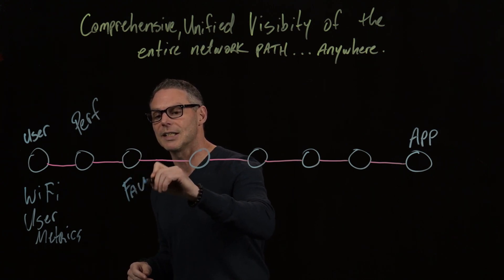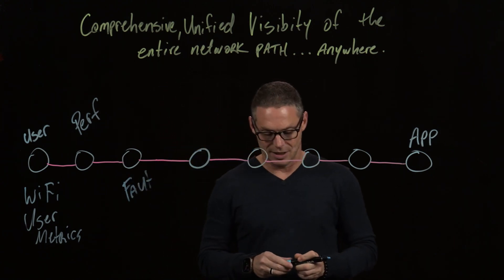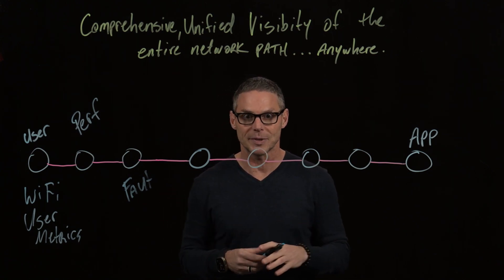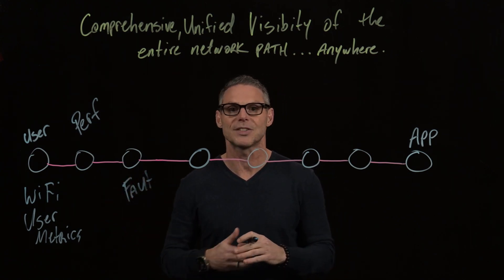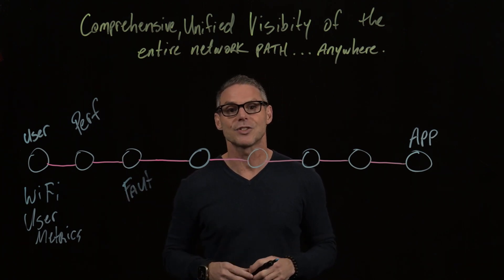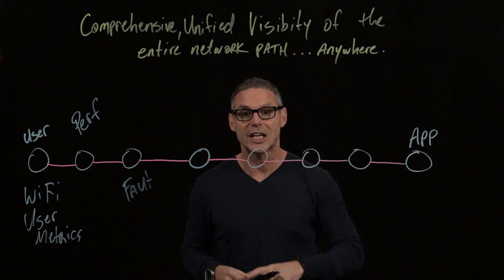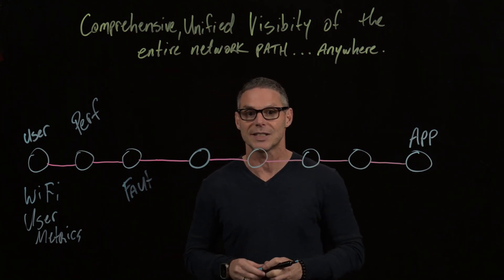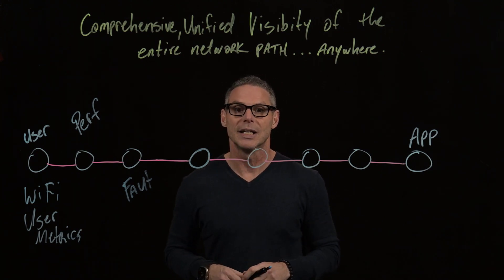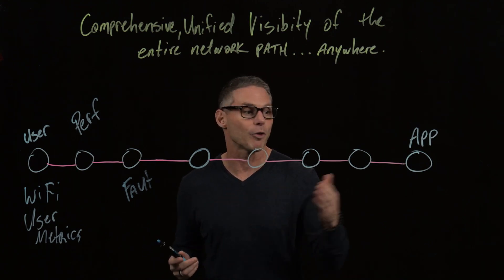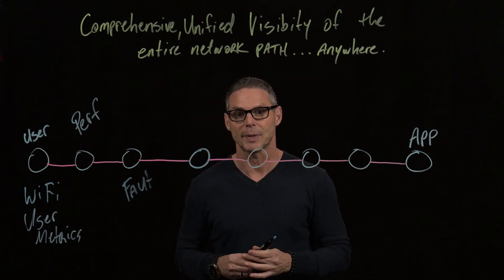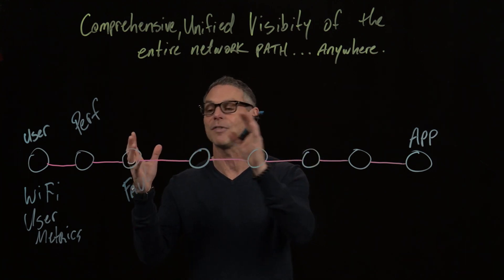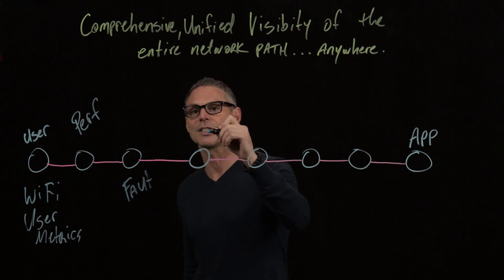Next we collect network fault data — isolating which device or devices are experiencing performance degradation, what their relationship is to neighboring devices, what configurations look like and whether they've changed recently, and whether there's anything in the logs giving investigative insight into the performance degradation along this network path. Network fault information is always very important to continue building visibility and gaining back control.